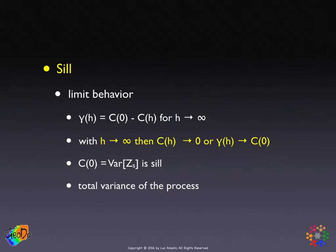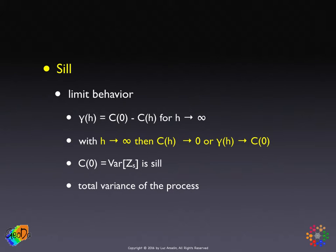As two points get closer together, the variance is decreased by their covariance. The difference between the total variance of the process and the covariance is the actual semi-variogram. Mathematically, you find the sill from this equation by setting c(h) to zero, which gives the semi-variogram equal to the variance of the process.